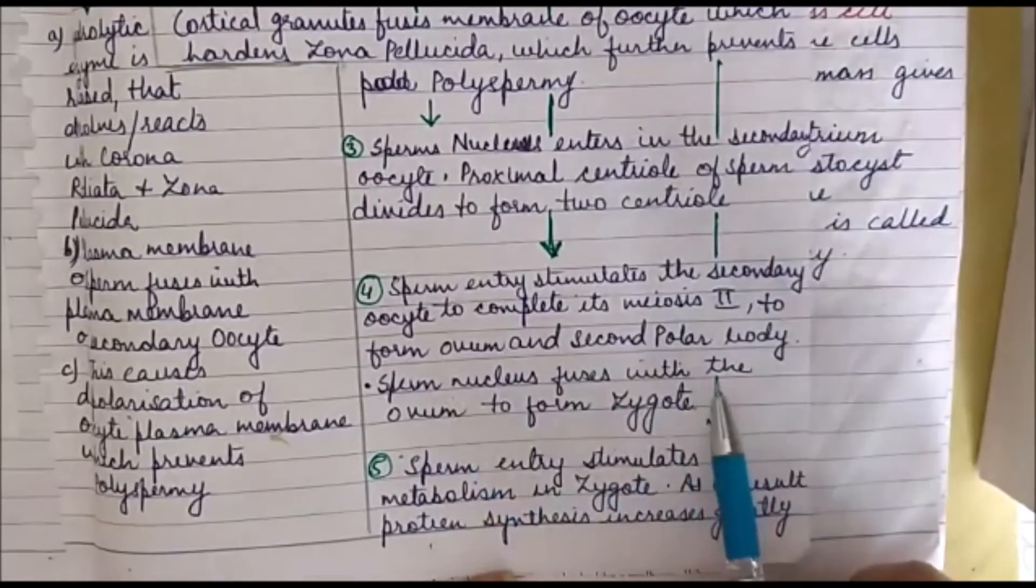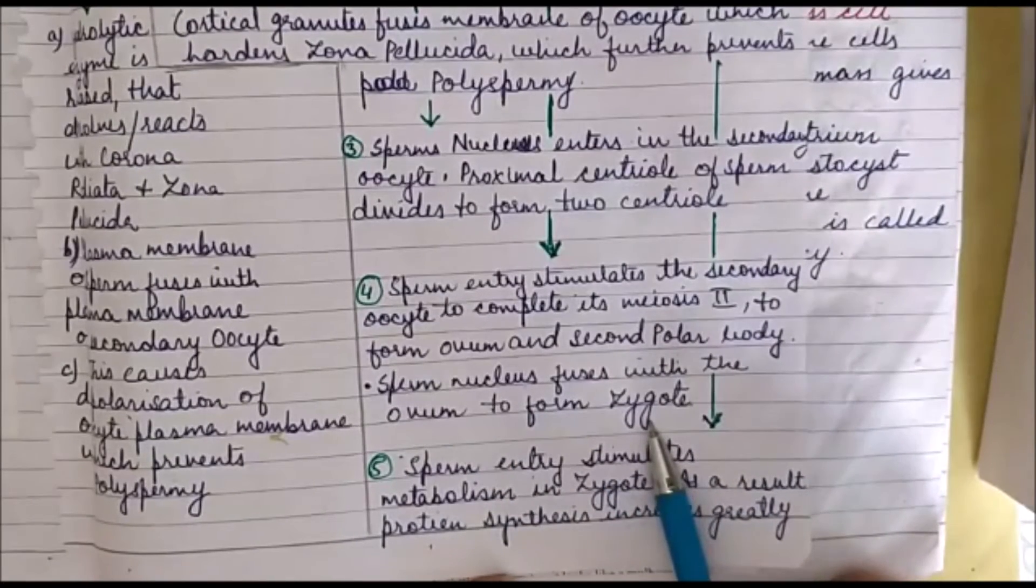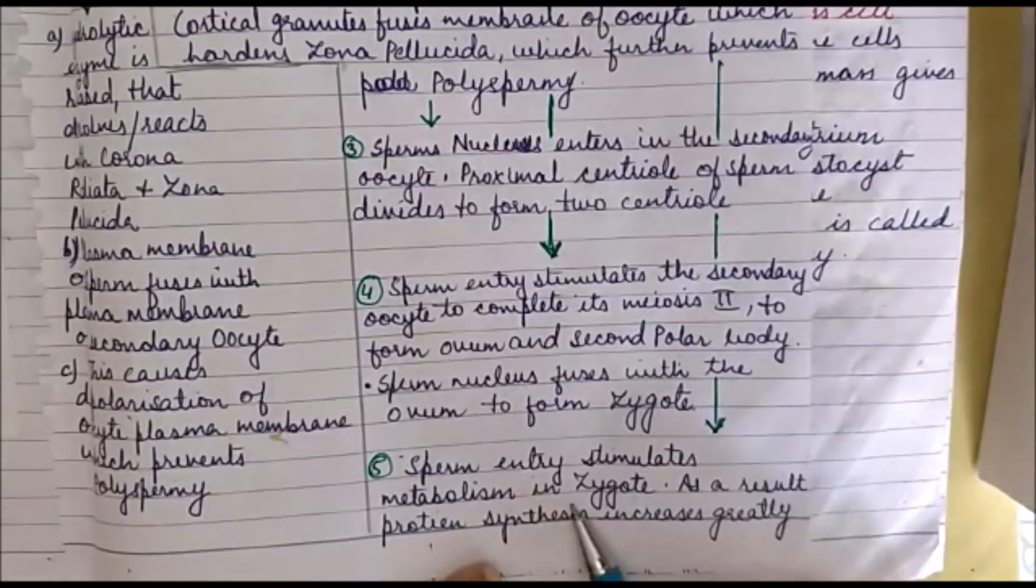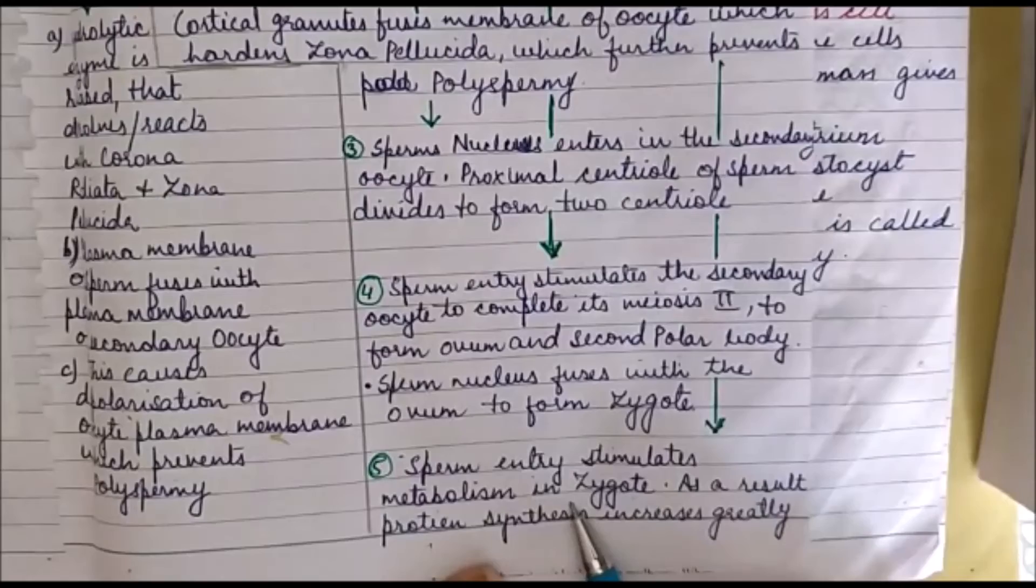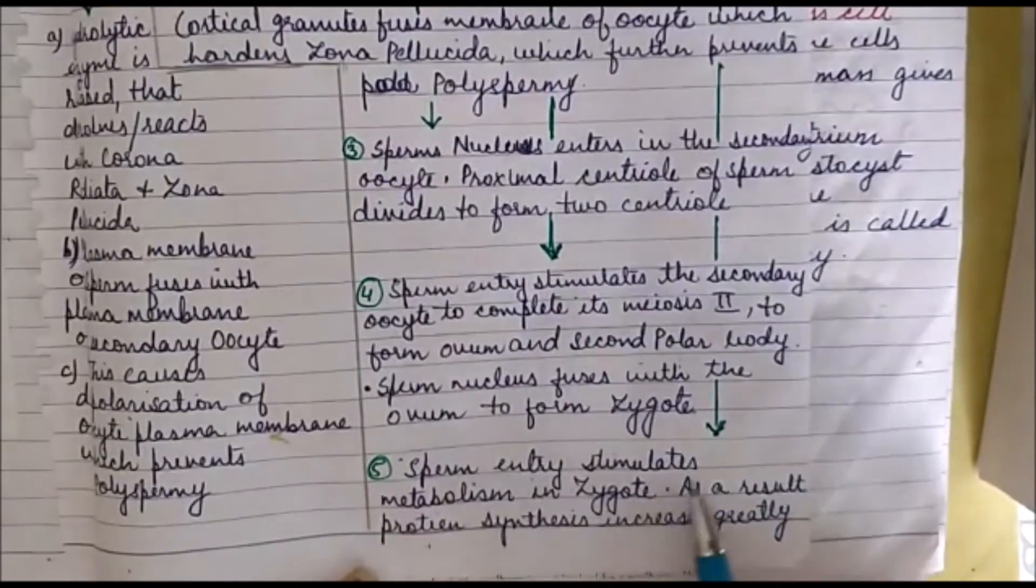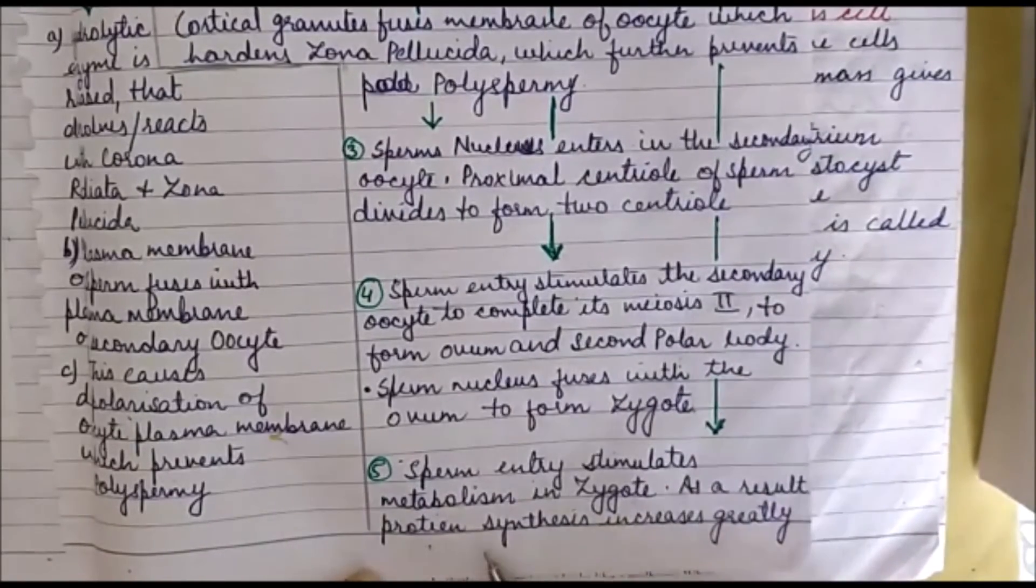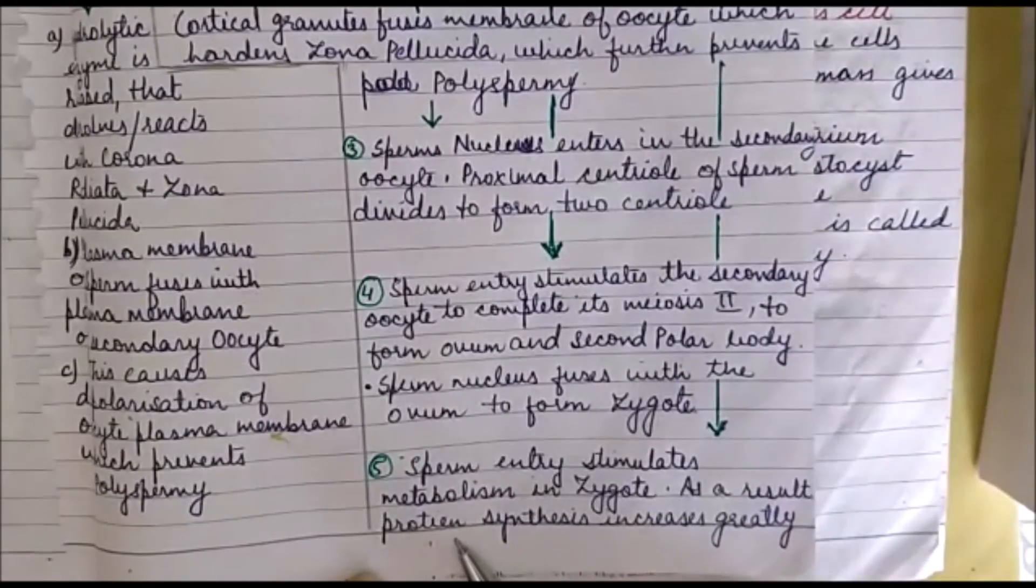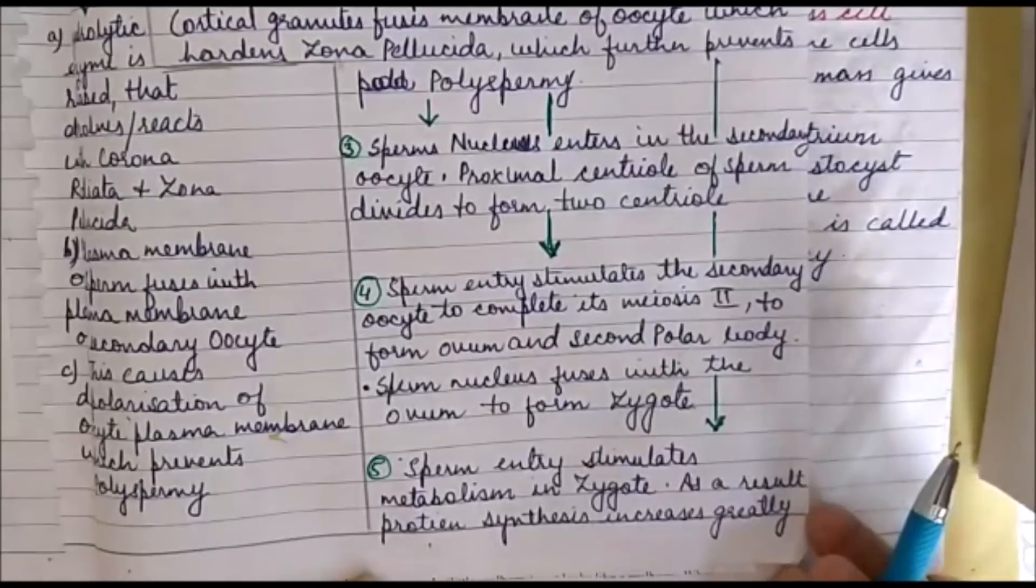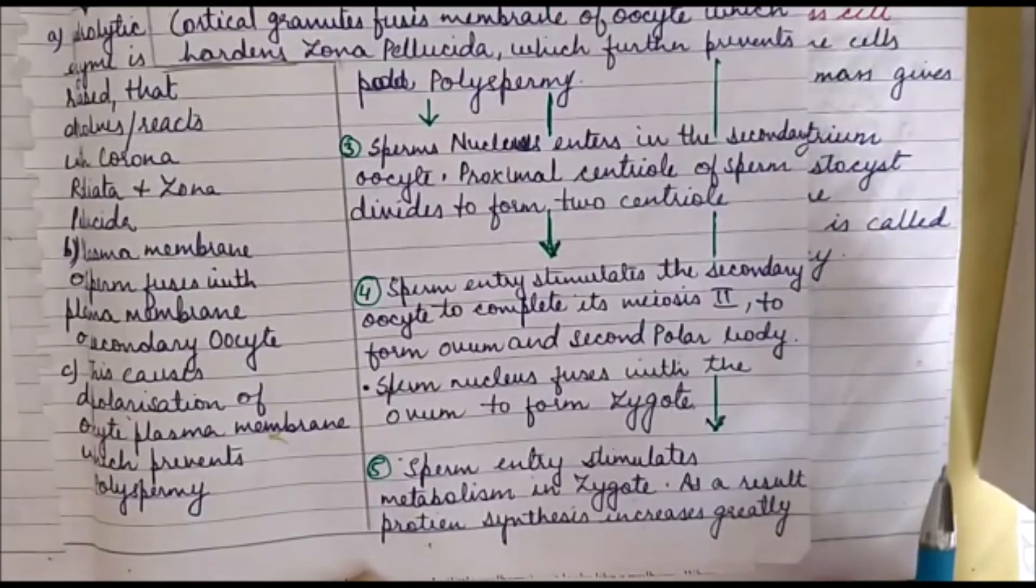This sperm nucleus fuses with the ovum to form zygote. The last part of fertilization is activation of the egg. In this activation of the egg, the sperm entry stimulates metabolism of zygote. As a result of that, there is protein synthesis taking place. This protein synthesis increases greatly and further zygote starts dividing to form cleavage, to form embryo. This division is known as cleavage.